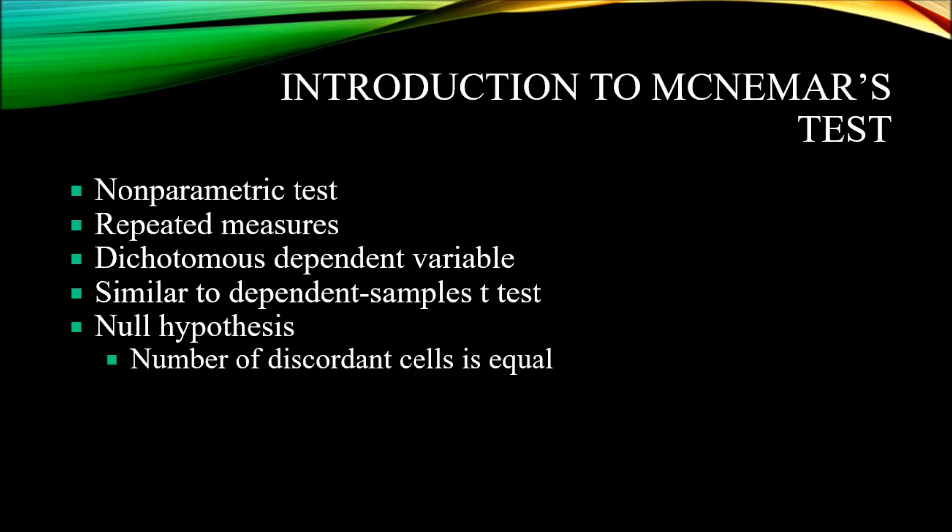These two types of responses, yes to no and no to yes, they would go in discordant cells on the two by two contingency table. Discordant cells is where we have a change, where we move from one level of the dependent variable to the other.